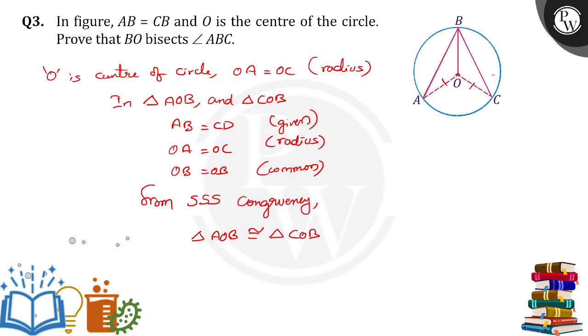When these two triangles are congruent, from CPCT (corresponding parts of congruent triangles), angle ABO is equal to angle CBO. These two angles are equal.